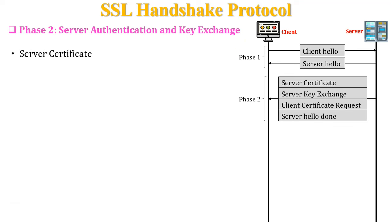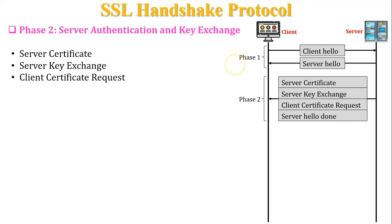In Phase 2: the server certificate — the server sends a certificate to authenticate itself to the client. If the key exchange algorithm is difficult, then no authentication is needed. Server key exchange is optional; it is used only if the server doesn't send its digital certificate. Client certificate request is also optional — the server can request the digital certificate of the client for authentication.